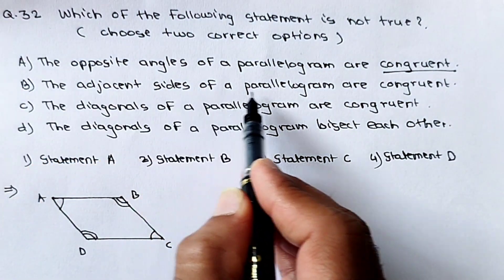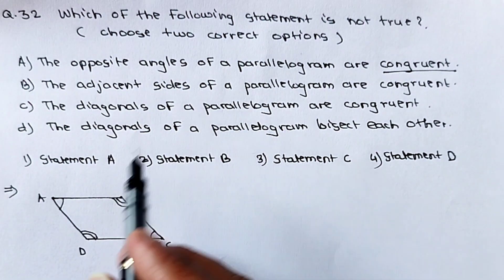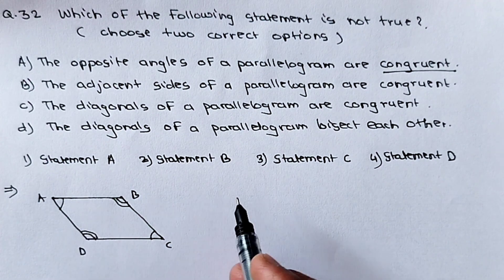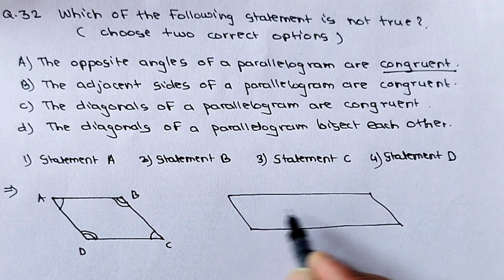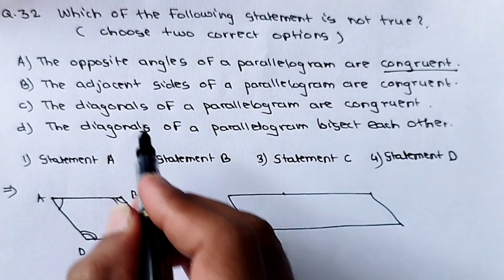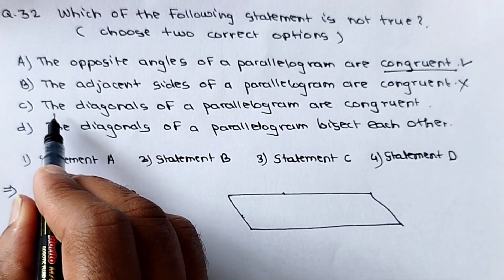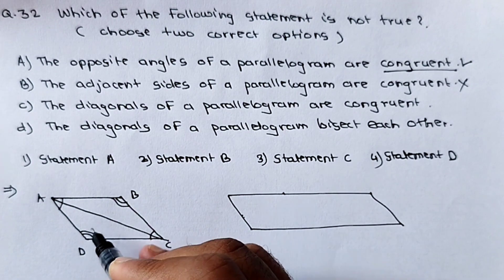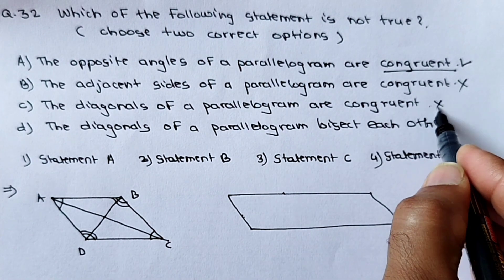The second statement: adjacent sides of a parallelogram are congruent. Adjacent sides AB and AD cannot be said to be congruent, because a parallelogram can have different adjacent side lengths — the only condition is that opposite sides must be parallel. So this statement is false. The third statement: the diagonals of a parallelogram are congruent. Diagonals AC and BD have different lengths, so they are not congruent. This third statement is also false.